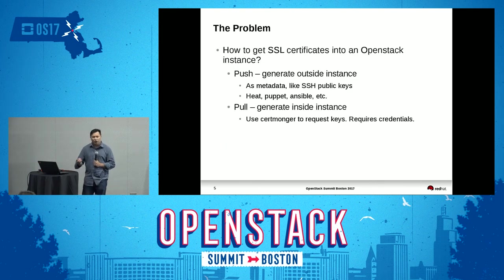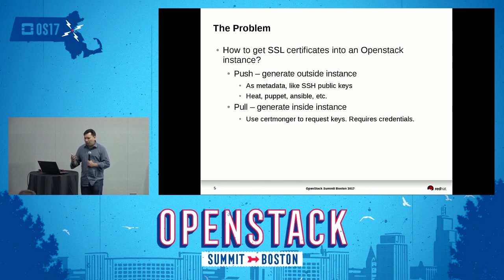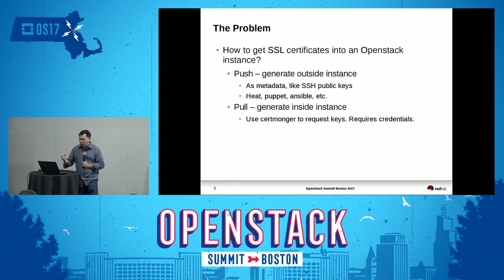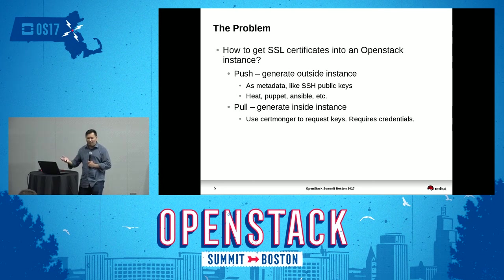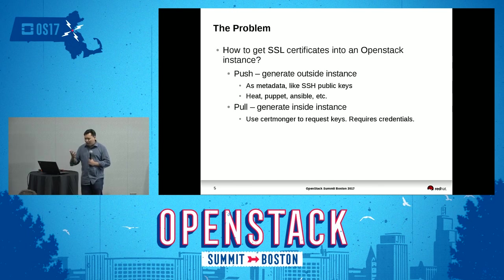The first is a push model. You basically generate the certificates outside of the instance and then push them in either through Ansible, Heat, or whatever the case may be. In the Triple-O context, for example, this would mean having the certificates and private keys generated on the undercloud and then pushing them to the instances. The main disadvantage is that now you have private keys hanging around both outside and inside the instance, creating a security problem, plus a maintenance problem when certificates need to be renewed or you redeploy.